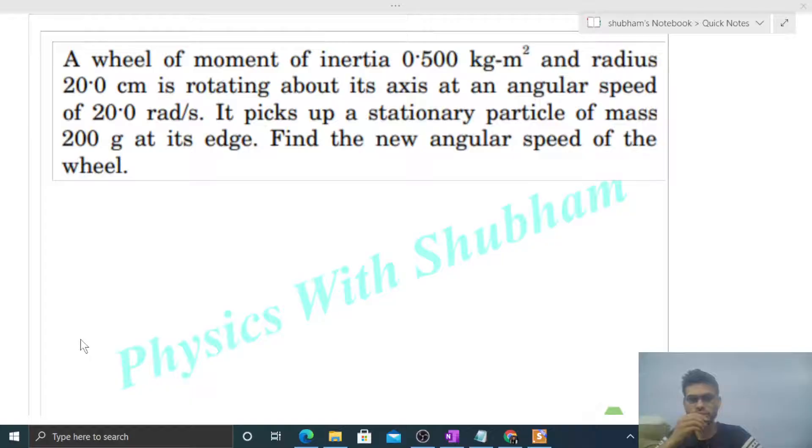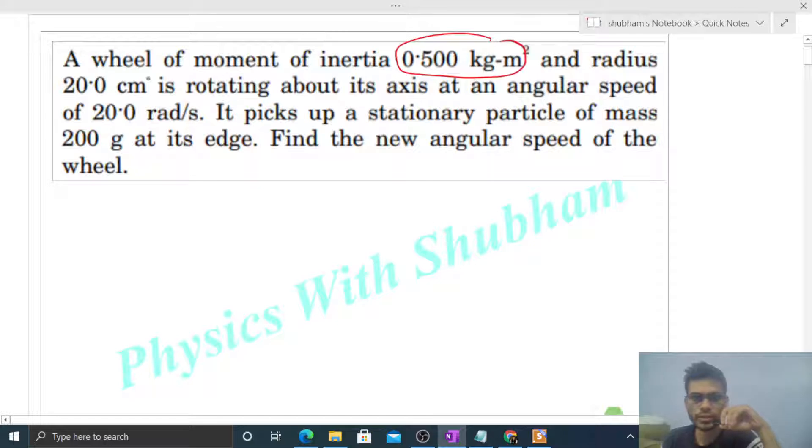Okay, hi everyone. So today let's discuss this interesting problem. It says a wheel of moment of inertia 0.5 kilogram meter squared and radius 20 centimeters is rotating about its axis at an angular speed of 20 radians per second. It picks up a stationary particle of mass 200 grams at its edge. Find the new angular speed of the wheel.